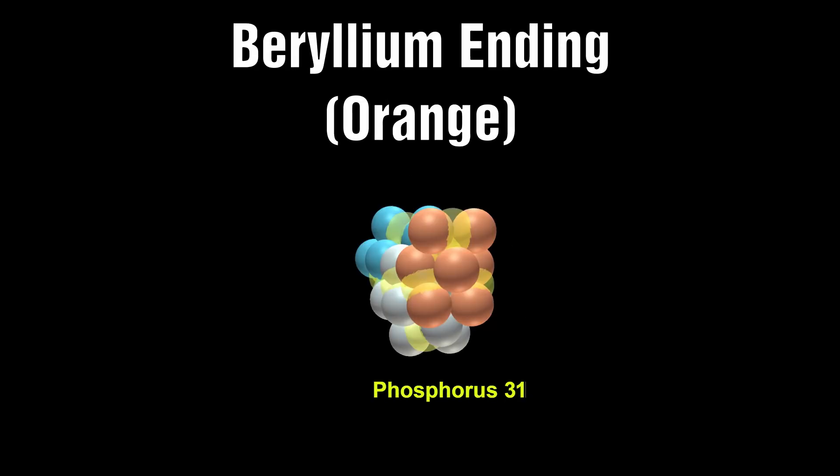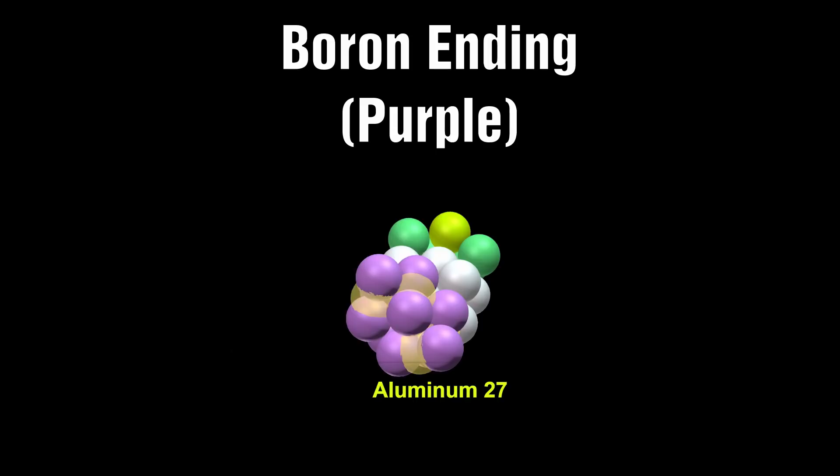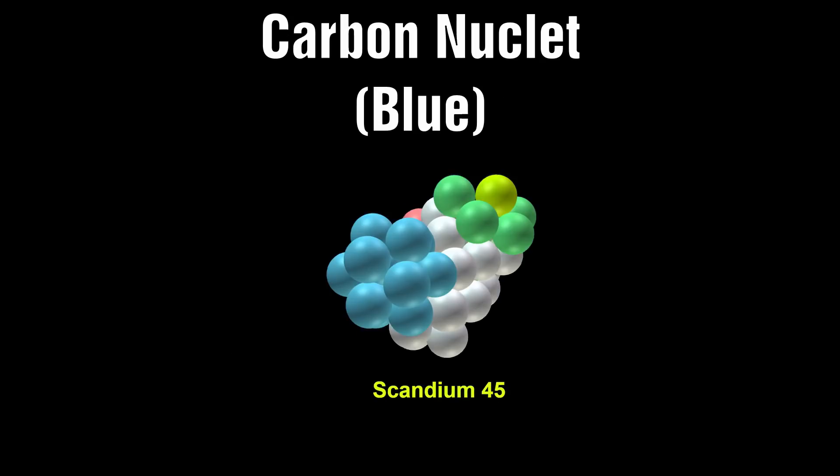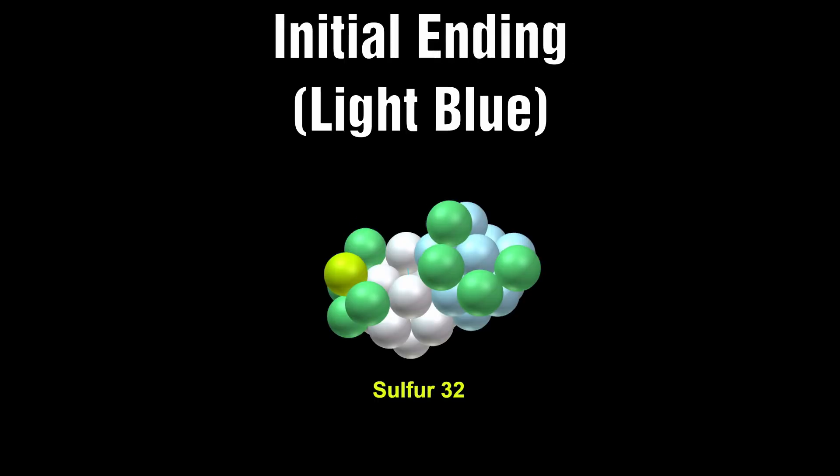Beryllium ending: this is an intermediary state between the lithium and carbon nuclet. Boron ending: this is also an intermediary state. Carbon nuclet: this is a complete icosahedron. An initial ending: both sides of the carbon are capped with four endings making this branch completely chemically inert.